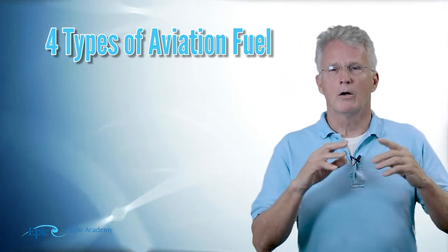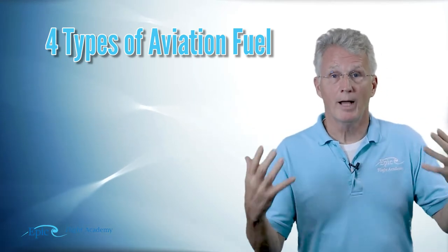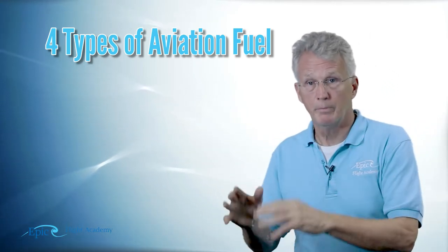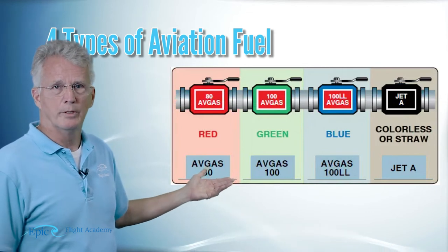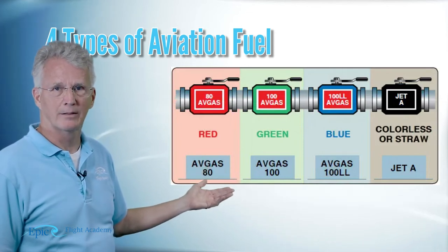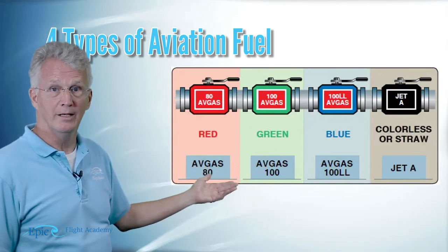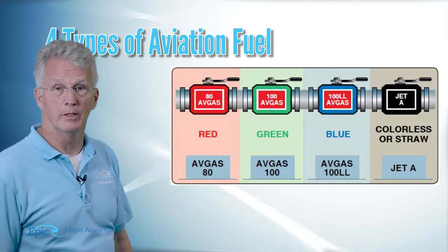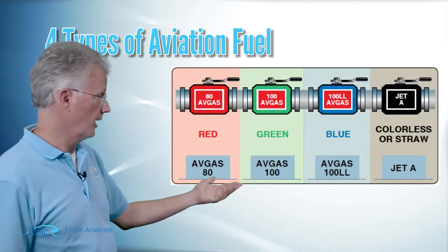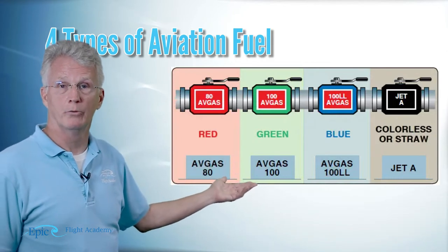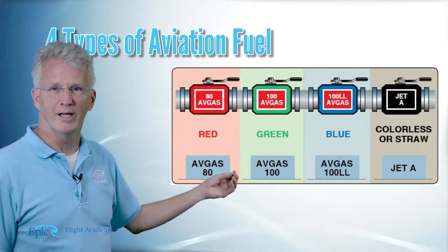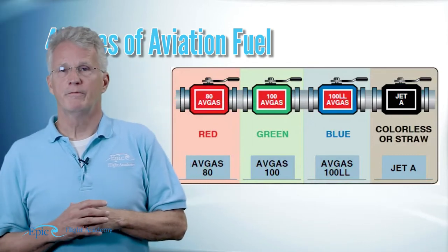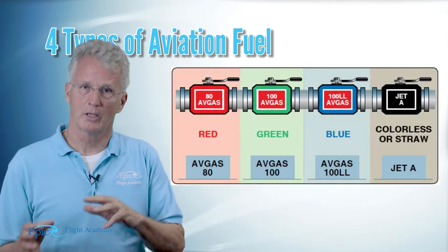Aviation fuels are color-coded with dye to help pilots recognize the correct type of fuel for their aircraft. Red dye is put into 80/87 octane fuel. Green dye is put into 100/130 octane fuel. Blue dye is put into 100 low lead octane fuel. And a straw-colored Jet-A is turbine fuel — essentially kerosene, slightly less refined.